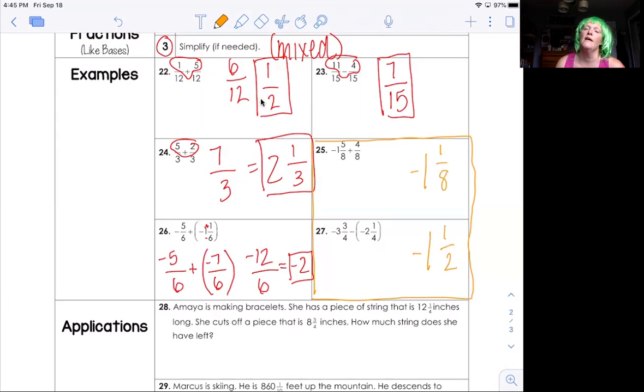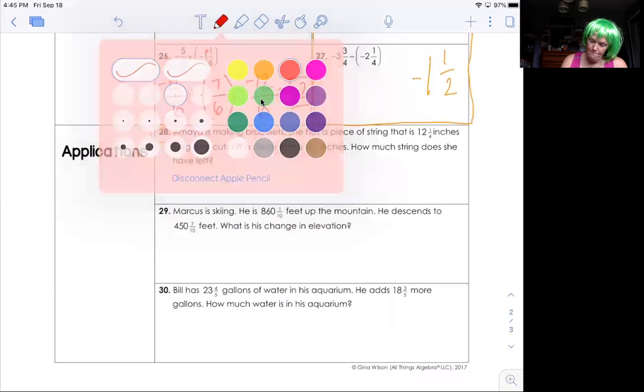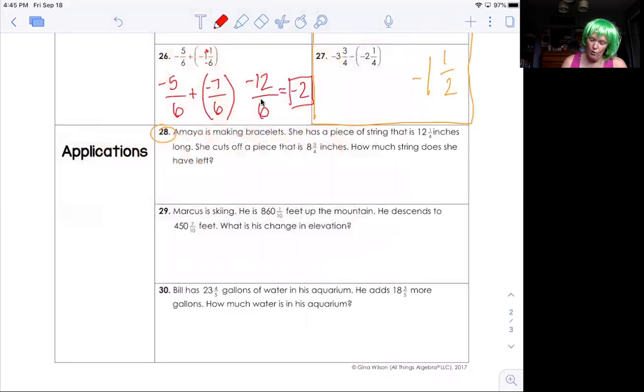Now let's look at some applications because again, real world, right? That's why we do this. Number 28. Amaya is making bracelets. She has a piece of string that is 12 and a quarter inches long. She cuts off a piece that is 8 and three quarter inches long. How much string does she have left? She cut it off. That's a good indication that it's subtraction. Her piece got smaller, right? So we're going to do the problem 12 and one fourth minus 8 and three fourths.